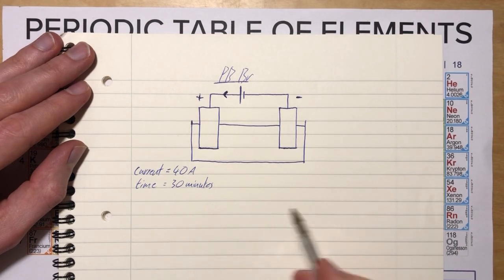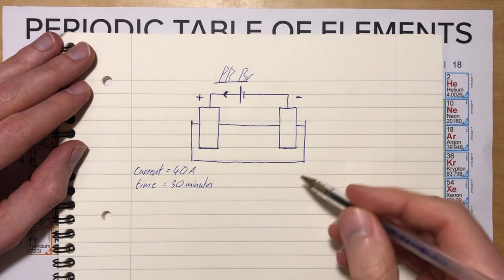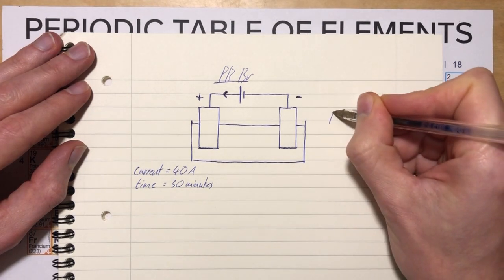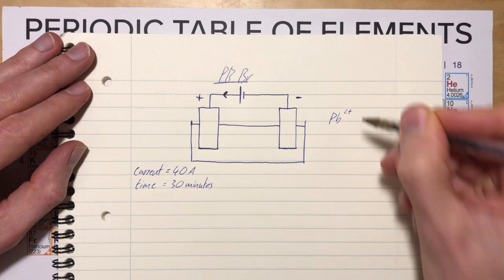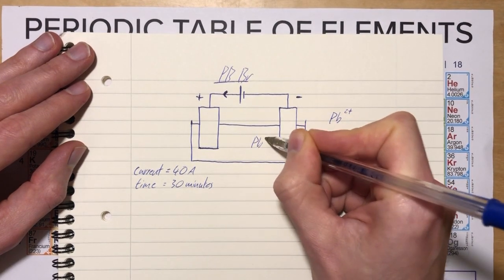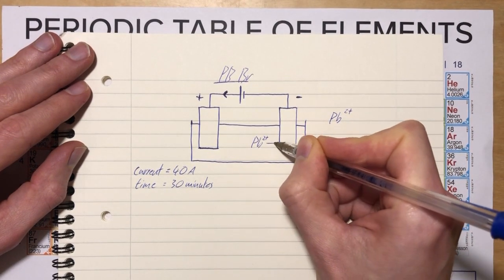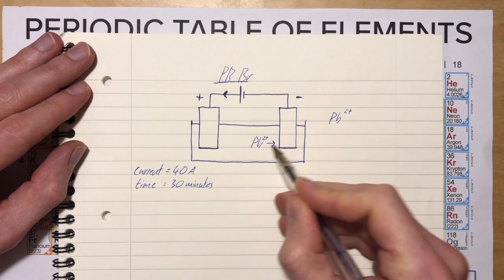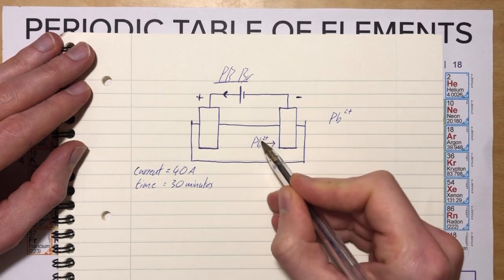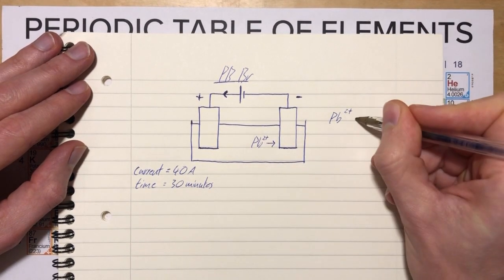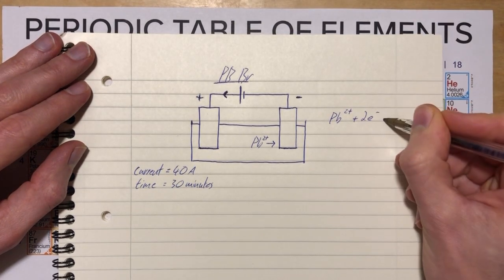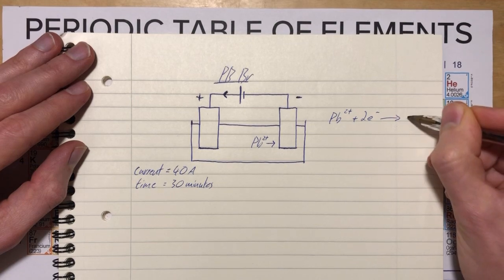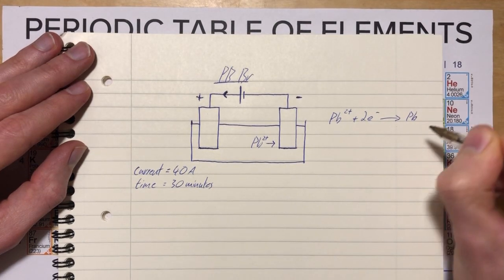Let's put together the half equations. Lead forms a 2+ ion, so we have Pb²⁺ ions moving towards the cathode. They're going to pick up electrons - they need two electrons. So we have Pb²⁺ + 2e⁻, and that will turn it into a lead atom.